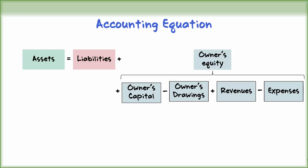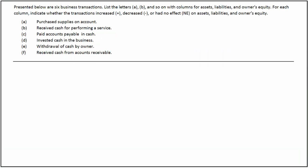Let us now look at an illustration to see how business transactions affect the accounting equation. Presented here are a few business transactions. We will indicate whether these transactions have increased, decreased, or had no effect on assets, liabilities, and owner's equity.